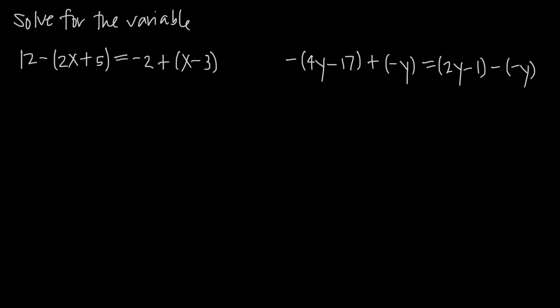In this video, we're talking about simple equation solving and how to solve equations when there are parentheses inside of the equations. So in this first example, we have 12 minus the quantity 2x plus 5, where we have 2x plus 5 inside parentheses, is equal to negative 2 plus the quantity x minus 3, where we have x minus 3 inside parentheses.